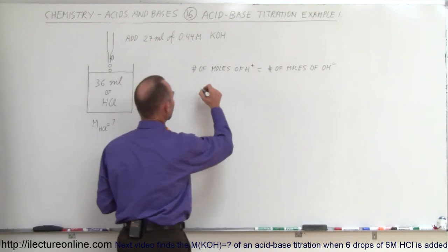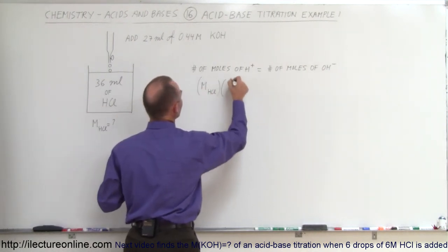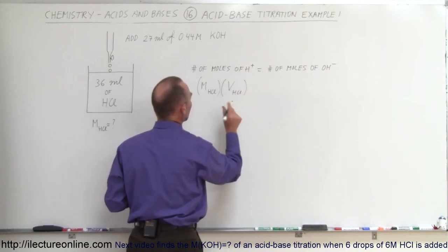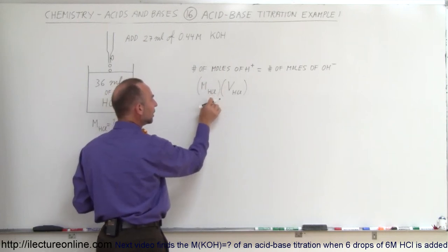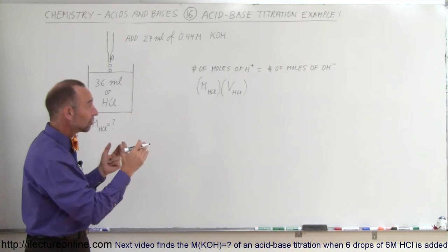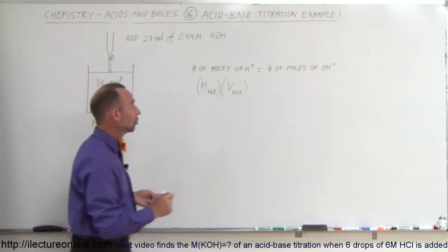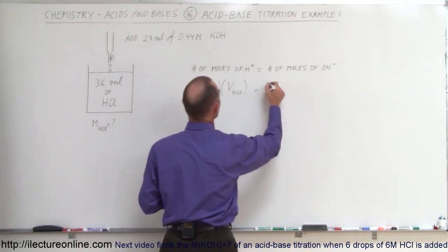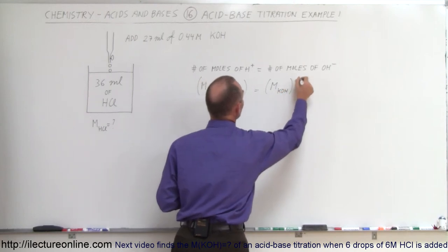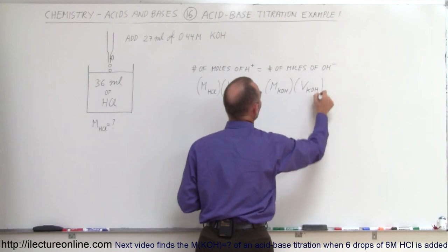The molarity of the hydrochloric acid multiplied by the volume of the hydrochloric acid — note that molarity is moles per liter, and volume is liters, so moles per liter times liters gives us moles — gives us the number of moles of hydrogen ions in solution. That is equal to the molarity of the potassium hydroxide times the volume of the potassium hydroxide being added.